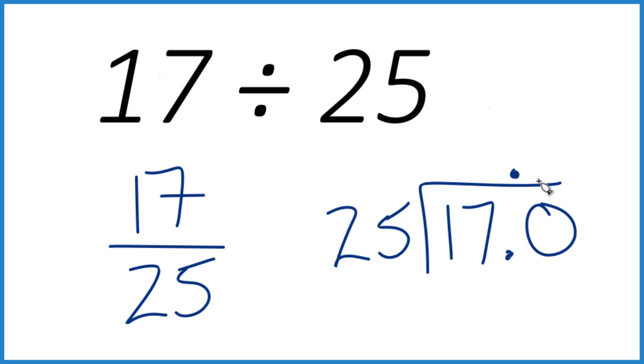Let's call it 17.0, and then we'll put a decimal point up here. So 6 times 25, that's 150.